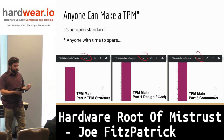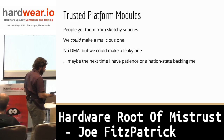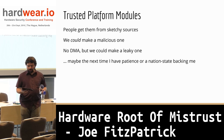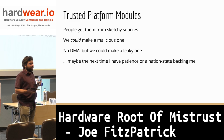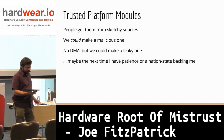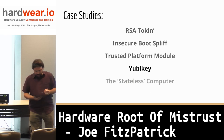People get them from sketchy sources. We could make a malicious one if we had the time. It doesn't have DMA access with just the standard connector, but we could probably make a leaky one that would somehow leak out those keys. Maybe the next time I have patience or a nation-state backing me, I can go down that path. So we have the RSA token, insecure boot, the TPM, and now the YubiKey.